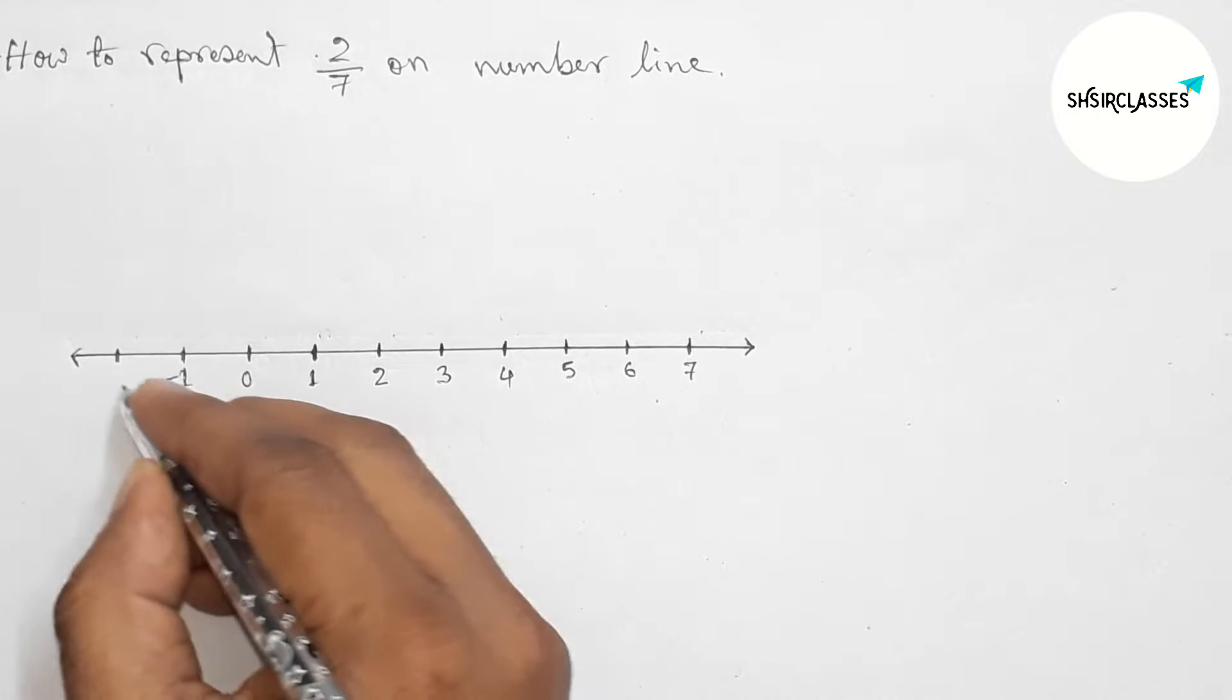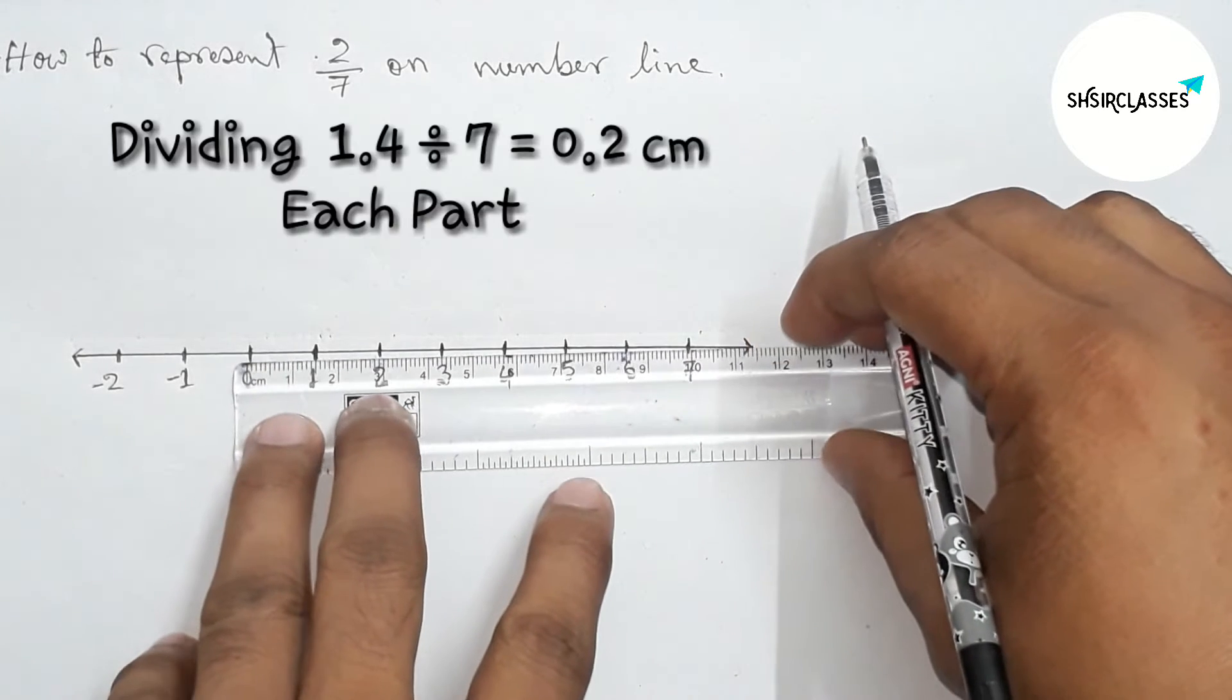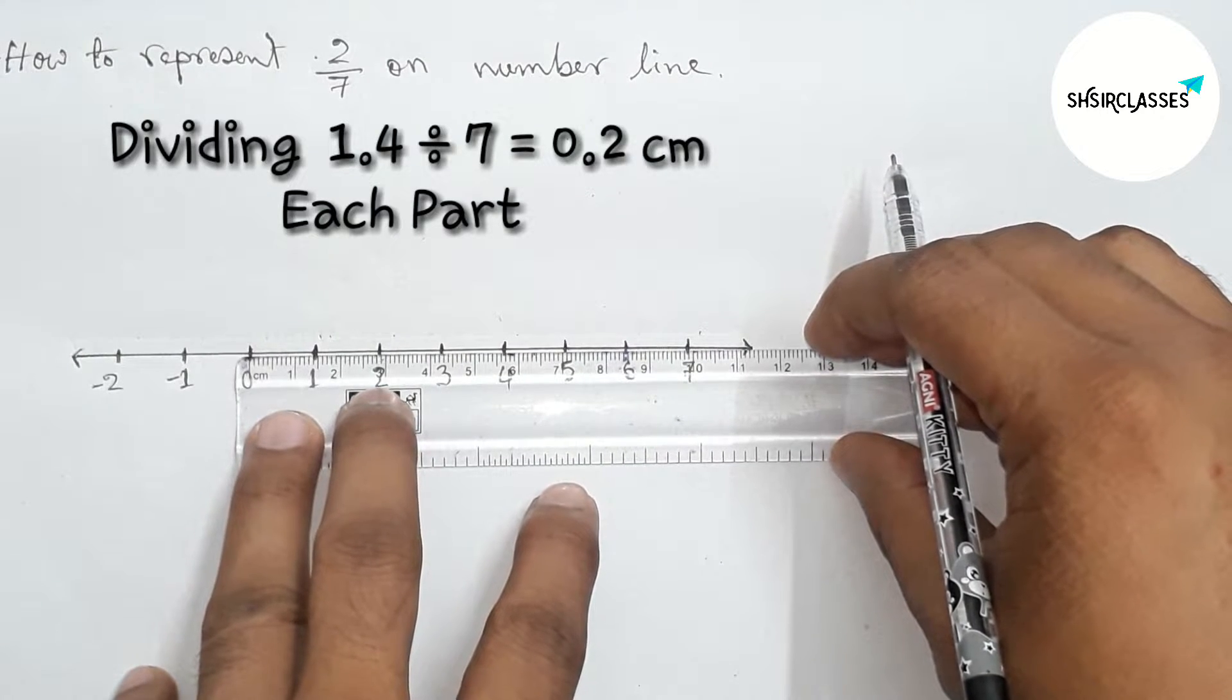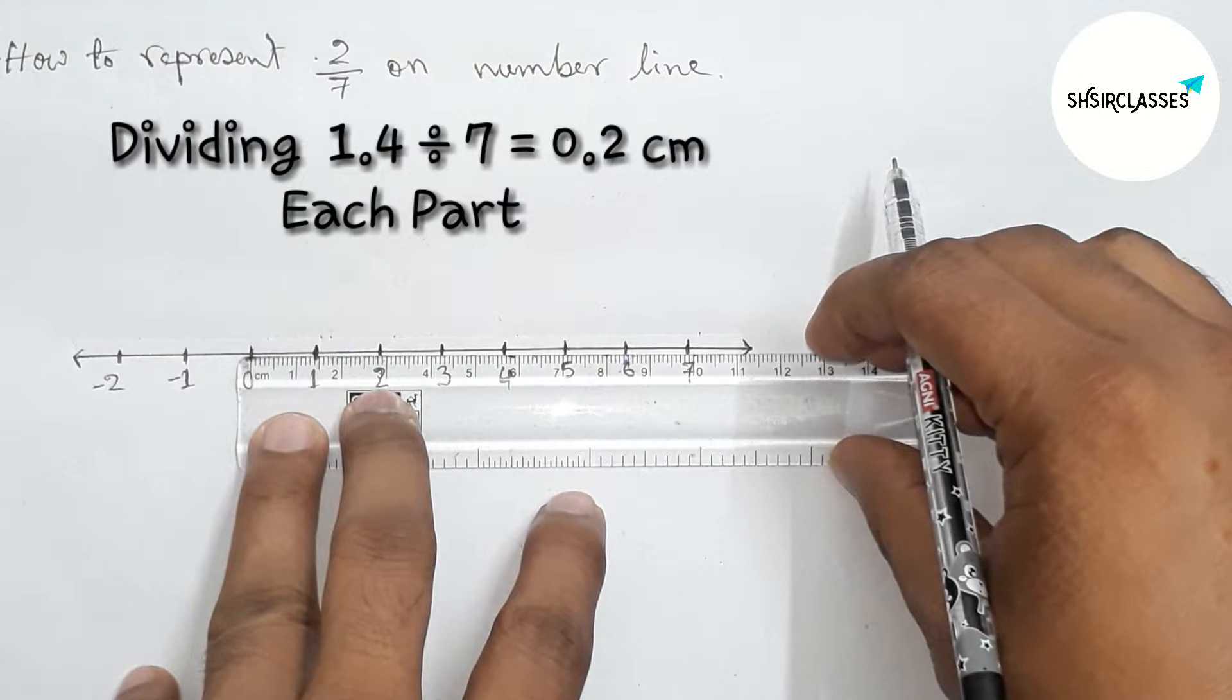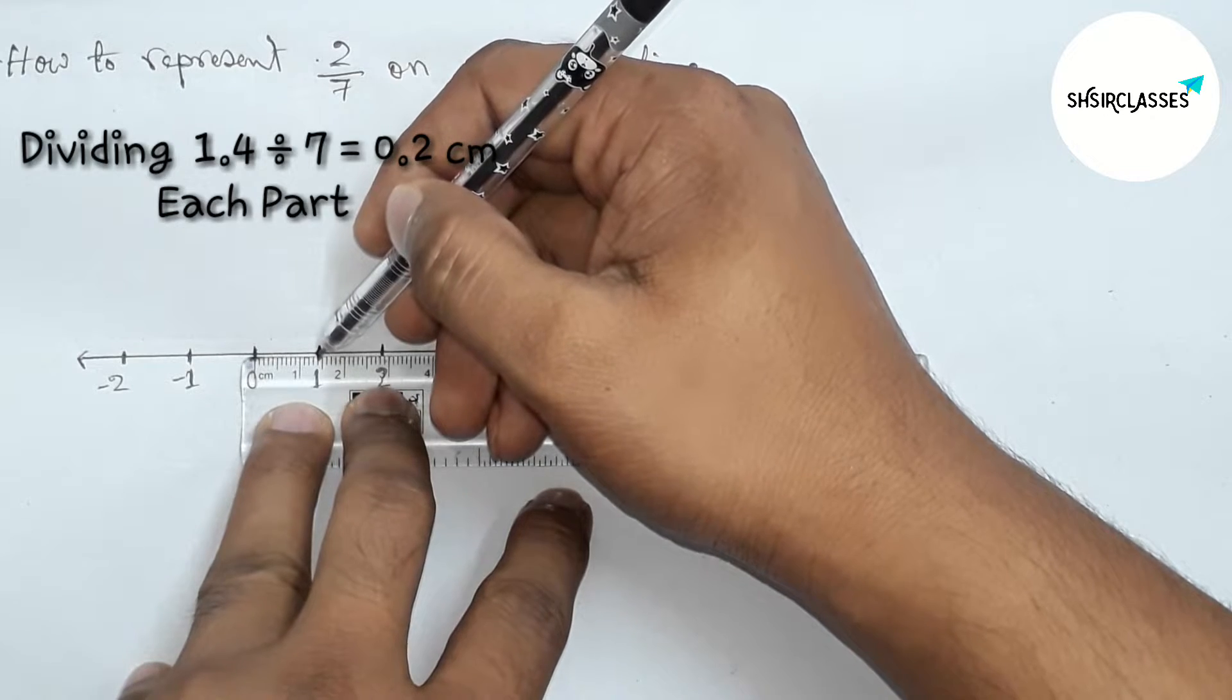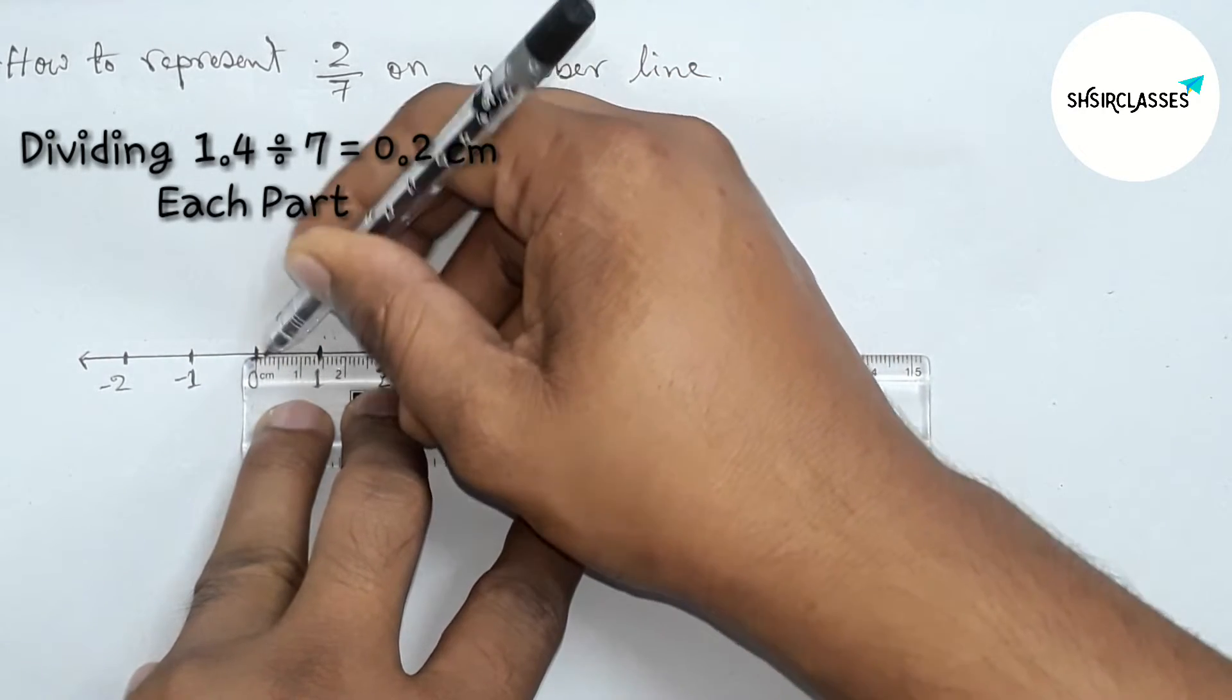Next, dividing the length between 0 to 1 into equal 7 parts. Here the length between 0 to 1 equals 1.4 centimeter. Dividing into 7 equal parts, the length of each equal part is 0.2 centimeter.